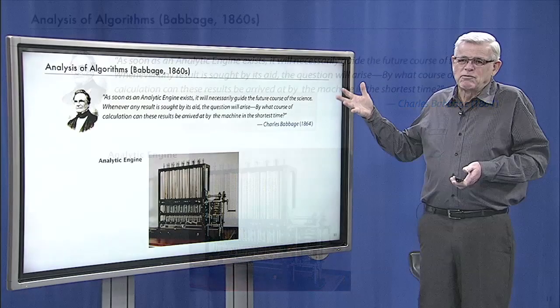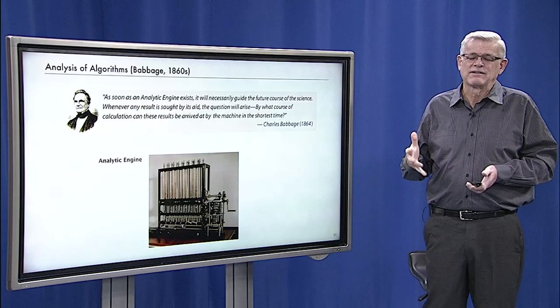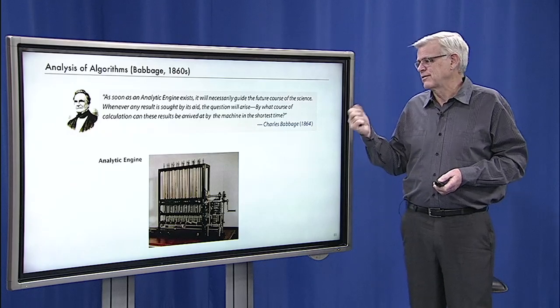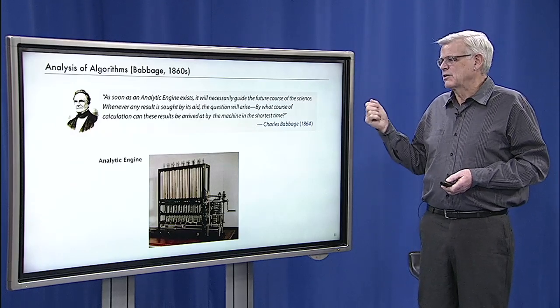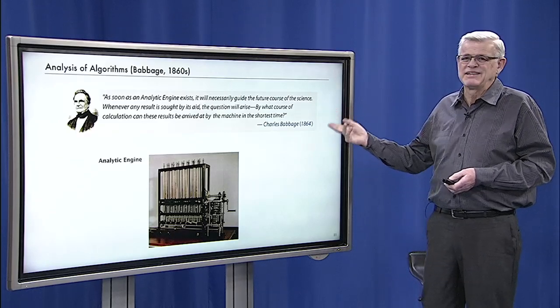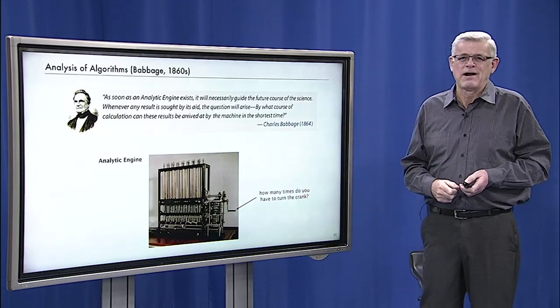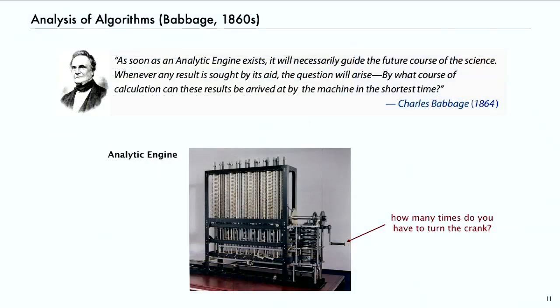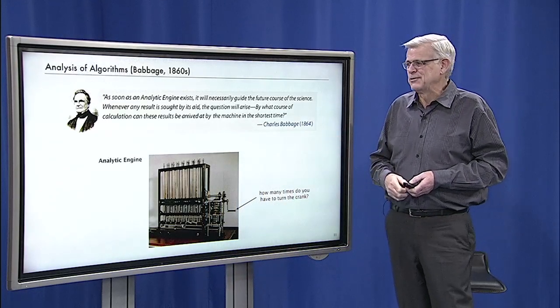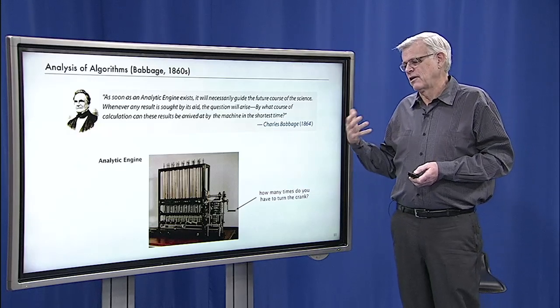And what he said, even before building the thing, as soon as an analytic engine exists, it will necessarily guide the future course of the science, because he'd be able to do computations. But he said, whenever any result is sought, the question will arise, by what course of calculation can these results be arrived at by the machine in the shortest time? That's in 1864. And you can see why it was important to Babbage. This thing actually had a crank, and the only way that it could compute things was by somebody turning the crank. Obviously, you want to minimize the number of times that you need to turn the crank.